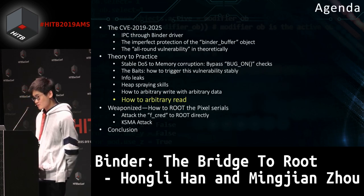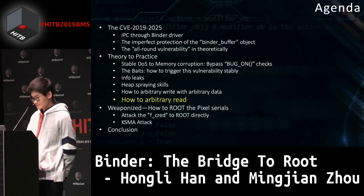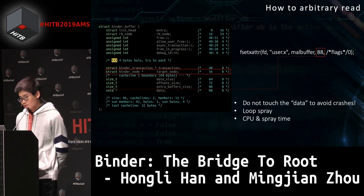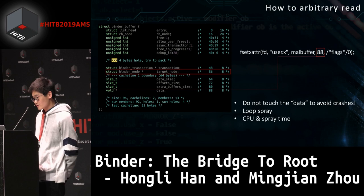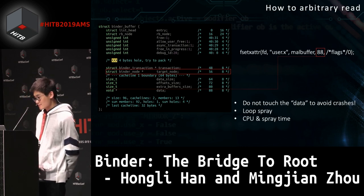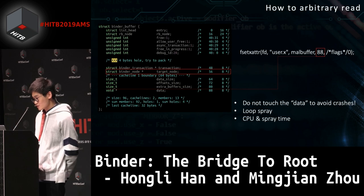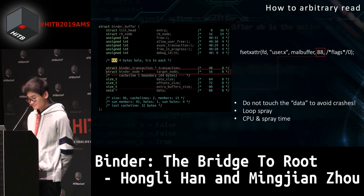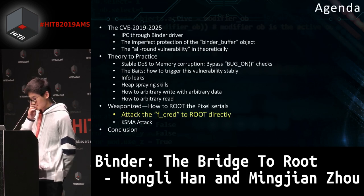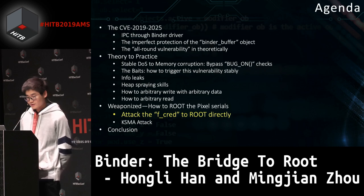Now we have arbitrary write ability. Let's try to do arbitrary read. As mentioned, we use the target_node for arbitrary read. But it will be set to a null pointer when the server process is woken. So we try the heap spray method — calling faccessat with size 88 in a loop. We also need to adjust the CPUs and control spray timing. Now we have arbitrary write, arbitrary read, and can leak kernel symbols. We will try to root the device.